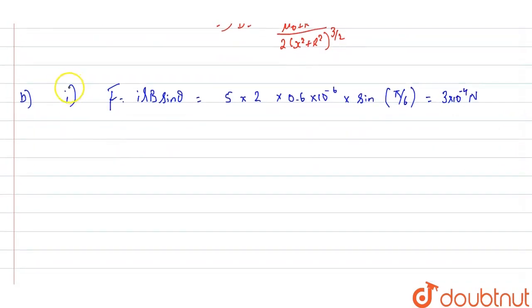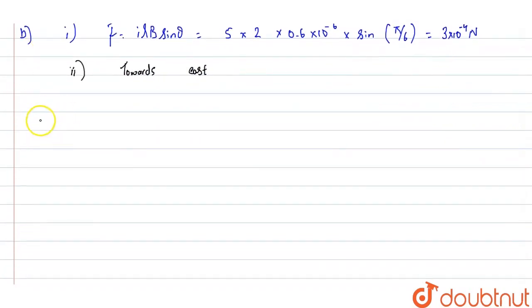Now for the next part of our question, we follow Fleming's right-hand rule with which we find that the direction of the field would be towards east. This is by using Fleming's right-hand rule. With this, we can conclude our answer.